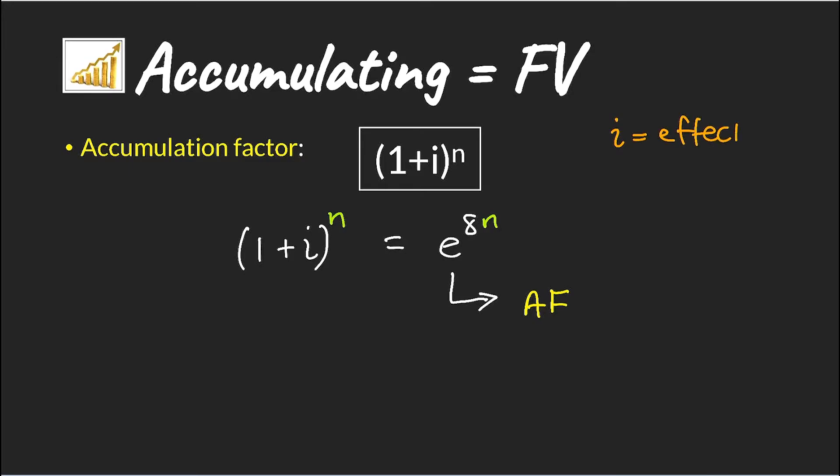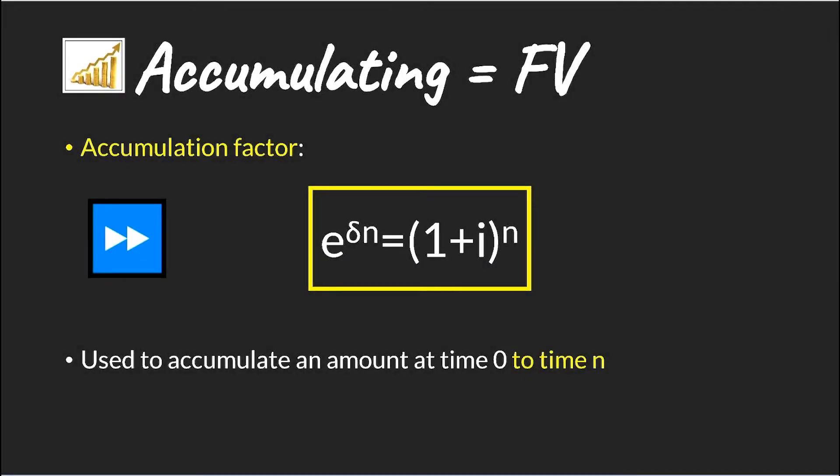Now, since the interest rate that we're using here, i, is an effective rate per annum, our force of interest also applies per annum, which means it covers from time 0 to time N. And this is essentially how we will find the future value of cash flows.